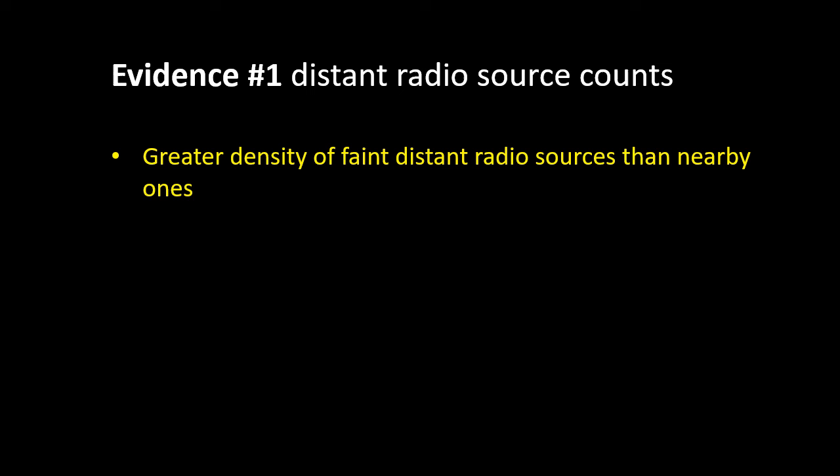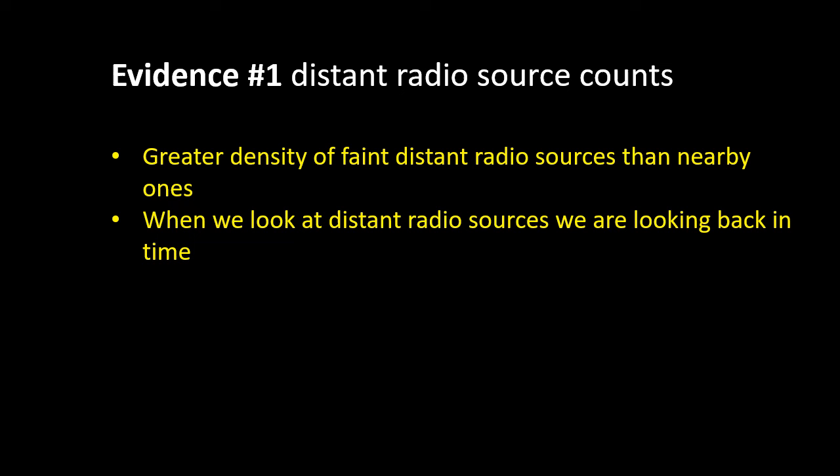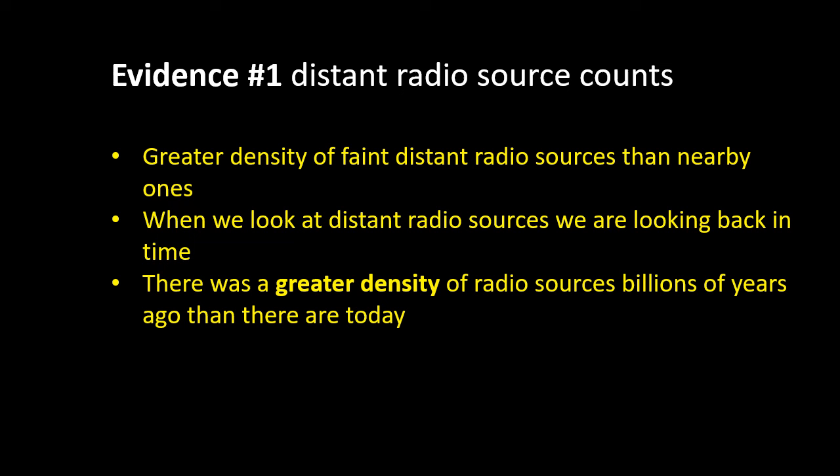Firstly, observations taken with radio telescopes show there were more radio sources a long distance away from us than would be predicted by the Steady State Theory. By a long distance, I mean billions of light years. Because of the time it takes light to reach us, when we look at objects billions of light years from us, we're looking back billions of years in time. So what these observations were saying is there are more cosmic radio sources billions of years ago than there are now. This suggests the universe is changing over time, which contradicts the Steady State Theory.